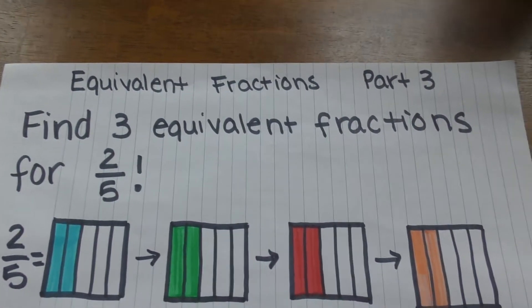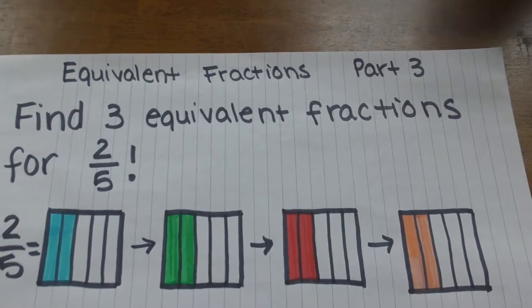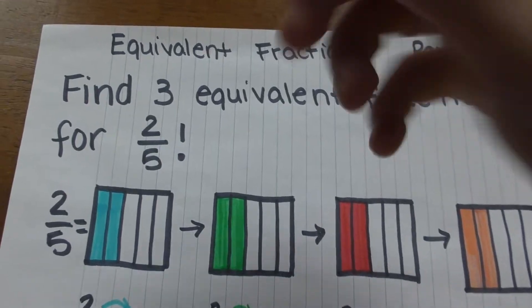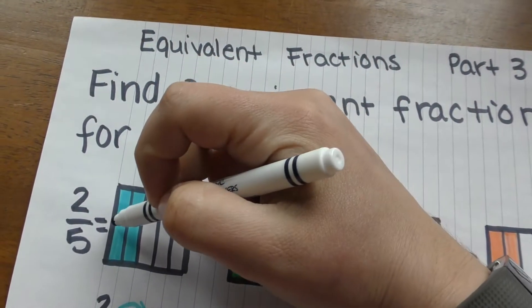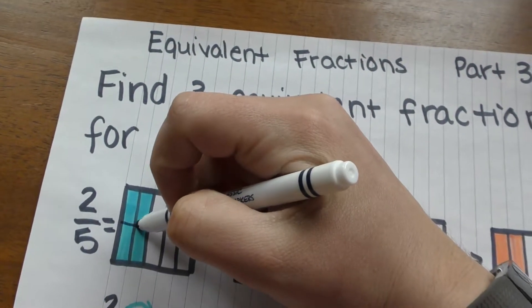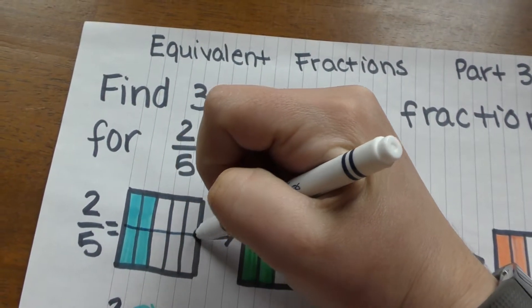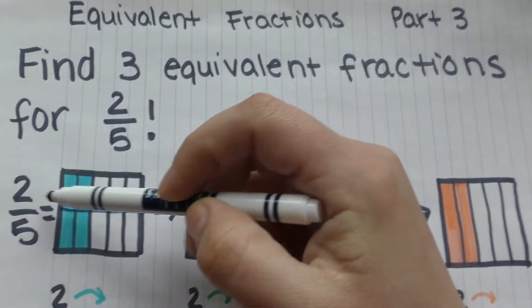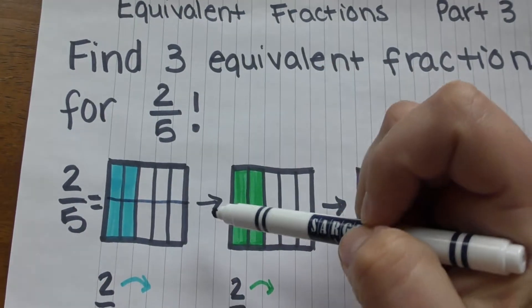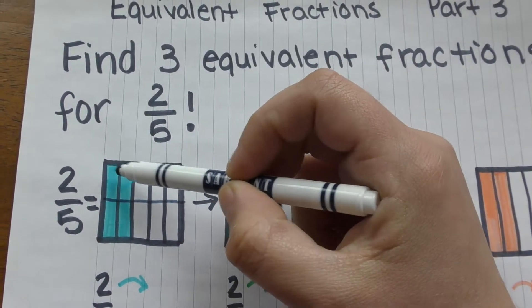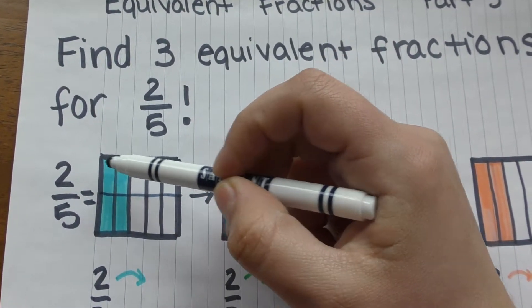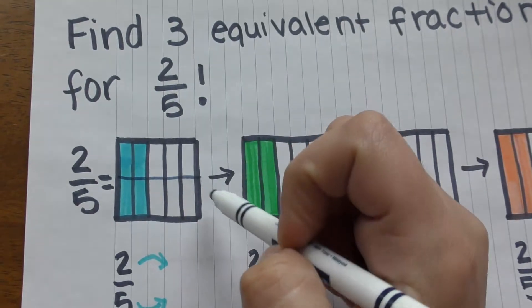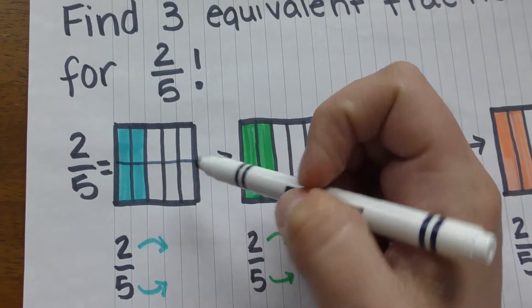So we know that if we cut our fraction in half — put a line down the middle — we made another equivalent fraction. So this one's showing four tenths.